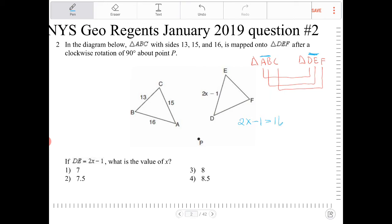So now I can solve for x. I'm going to add 1 to both sides. I get 2x is equal to 17. Divide by 2. X is equal to 8.5.